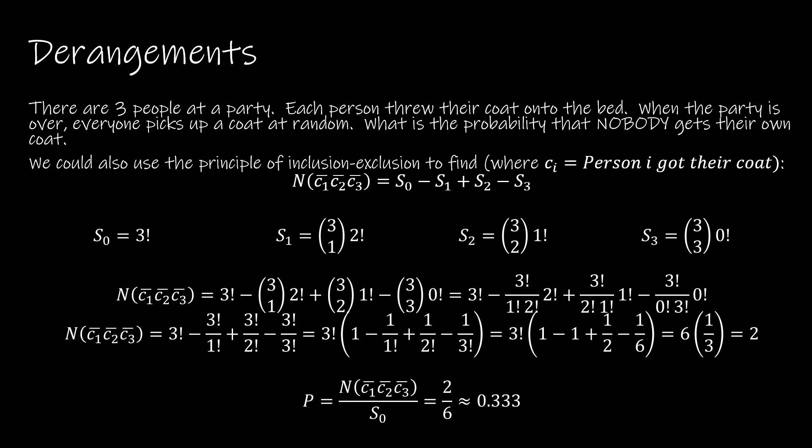Brute force is not the way to go. So we can look at this using the principle of inclusion-exclusion, which makes sense because that's what we've been working on. If we just let each condition be that person i got their coat, so C1 is person one got their coat, C2 is person two got their coat, then we could find S0, S1, S2, S3.